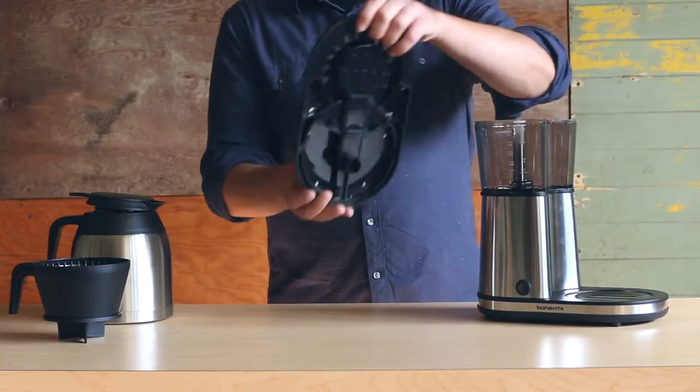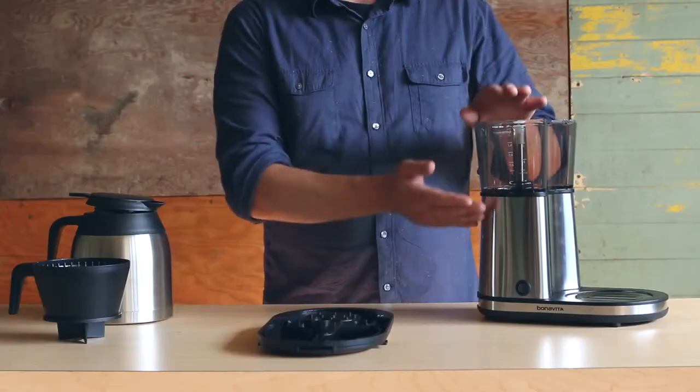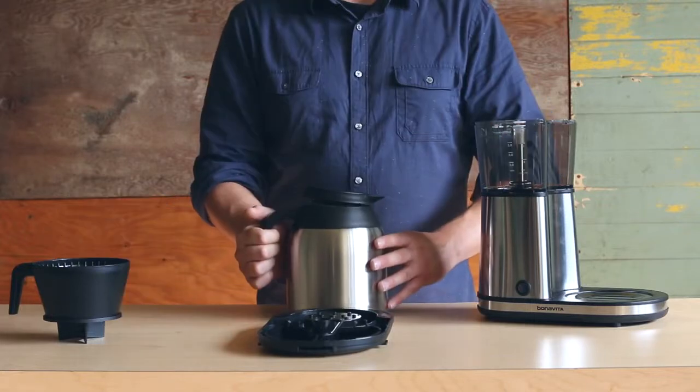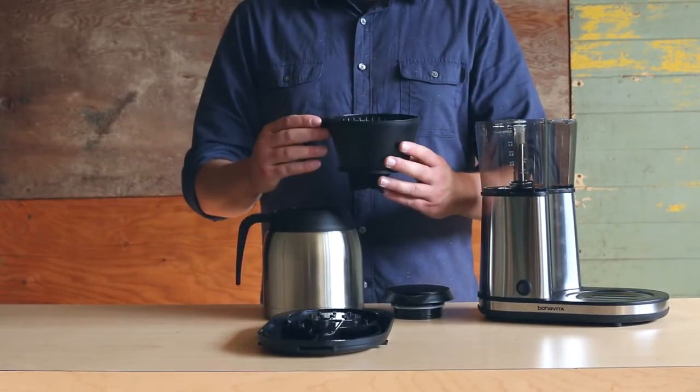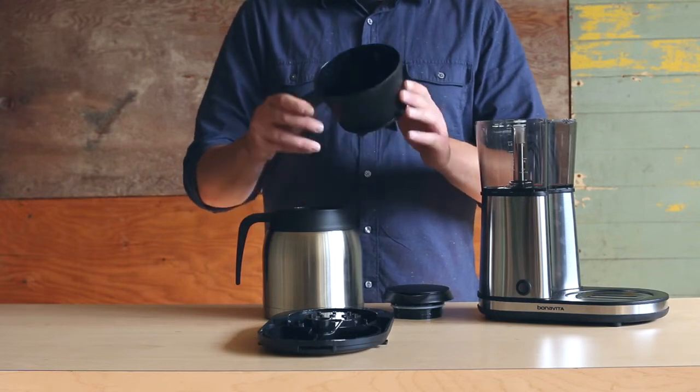This is the brewer lid with the shower head underneath. This is the water reservoir. And this is the carafe and carafe lid. Also this is the filter basket. It is top rack dishwasher safe.